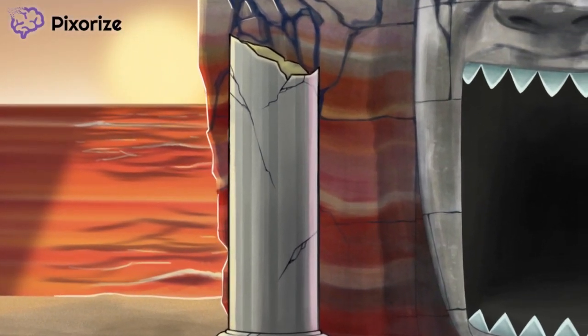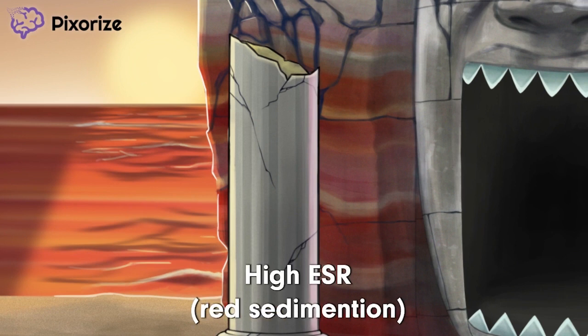Next, notice how the temple is constructed out of a special kind of rock — it's red and kind of reminds me of sedimentation. This red sedimentary stone should help you remember the sedimentation of red blood cells, also known as the erythrocyte sedimentation rate. The ESR is a surrogate for inflammation, and it is increased in giant cell arteritis, which makes sense since giant cell arteritis is an inflammatory disease. The suffix "-itis" literally means inflammation.